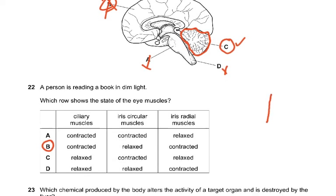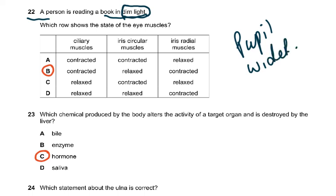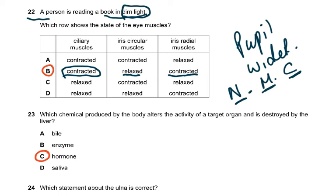The labeling of the brain is a very common question. Question 22: a person is reading a book in dim light — which row shows the state of the eye muscles? In dim light, the pupil has to be wider. The circular muscles must be relaxed and the radial muscles contracted. The ciliary muscle must contract because when looking at something near, the lens has to be more convex.